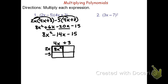The next one up top is 2x times 3 — that's 6x. On the bottom, negative 5 times 4x is negative 20x. And lastly, negative 5 times 3 is negative 15. If you look at the problem above, you'll notice the same four terms: the 8x squared, the positive 6x, the negative 20x, and the negative 15 are the same four things we found when we did the repeated distribution.